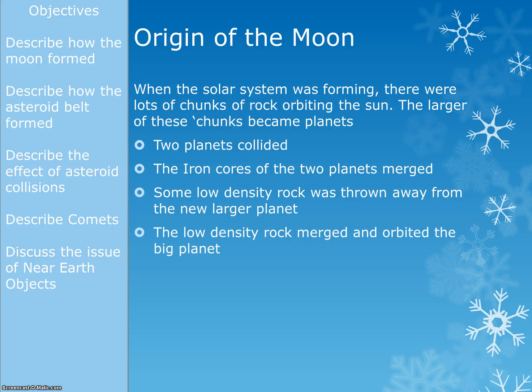So that's just how the Moon formed. Two planets, or two smaller planets, collided together. They merged, and the debris that came off orbited the planet, and that's the Moon.